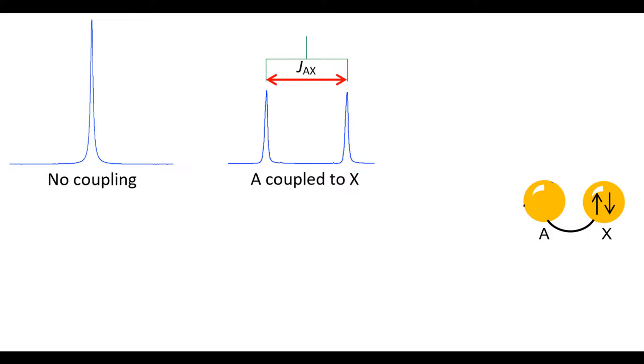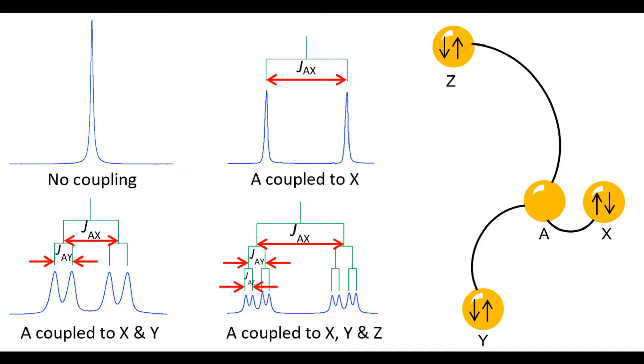One coupled nucleus splits it into two peaks, two nuclei four peaks, three nuclei eight peaks, etc. N coupled nuclei split the signal into as many as 2 to the power of N plus 1 signals.